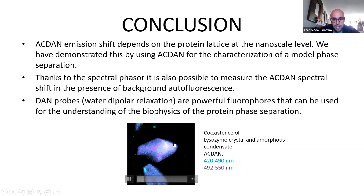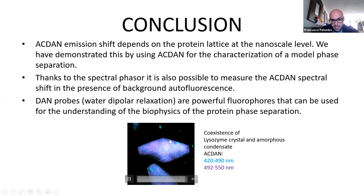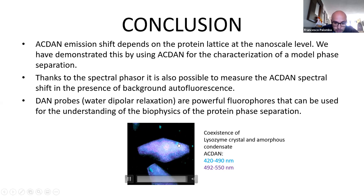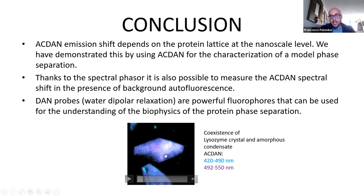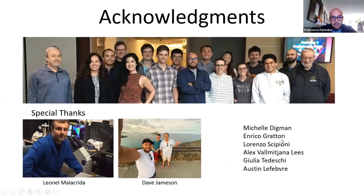In this animation, you can see a lysozyme crystal shown in a Z-scan. The crystal appears purple while the amorphous particle is cyan. We can also use this approach to characterize other protein phase separations. The spectral shift is very strong, and here we are using a simple generalized polarization analysis — making the ratio between two emission channels — and it is sufficient to discriminate the crystal phase from the amorphous phase.